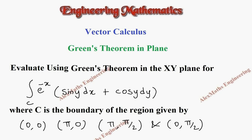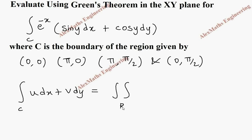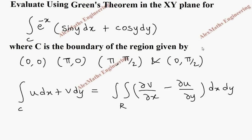Hi students, this is Alex. In this video we are going to evaluate using Green's theorem. The Green's theorem statement is: integral over C of u dx plus v dy equals double integral over the region R of (∂v/∂x minus ∂u/∂y) dx dy. From the question we find u and v.